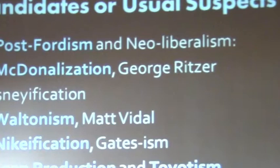What are the cast of characters? Who are the candidates for the new division of labor? We have the usual suspects — five suspects: Post-Fordism, sometimes referred to as neoliberalism; McDonaldization; Waltonism, based on Walmart for the most part; Nikefication, sometimes Gates-ism comes in on that; and lean production and Toyotism. What I'd like to do today is talk through those five different points and try to make sense of all these different kinds of approaches to the division of labor.